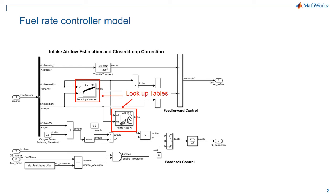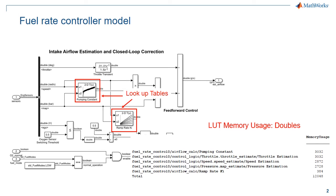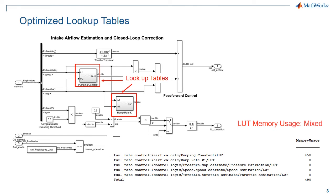Here we have a fuel rate controller model that has a couple of 2D lookup tables and they consume about 12KB of memory. The lookup table optimizer can compress this by more than 90% to near 500 bytes by replacing these with optimal lookup tables.